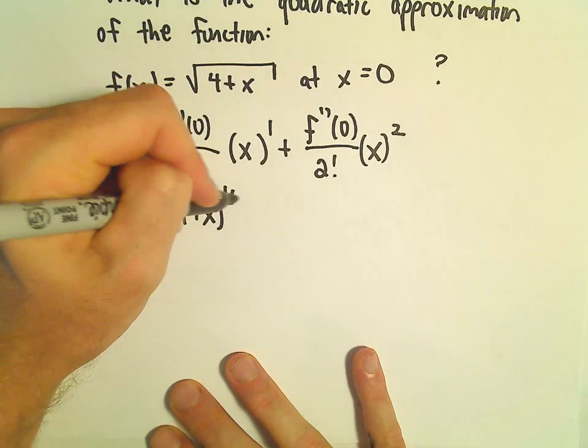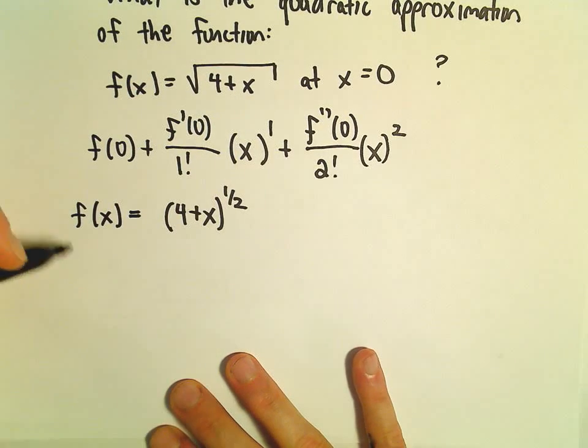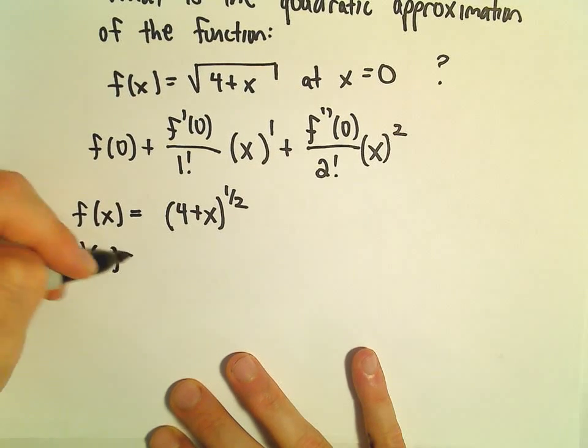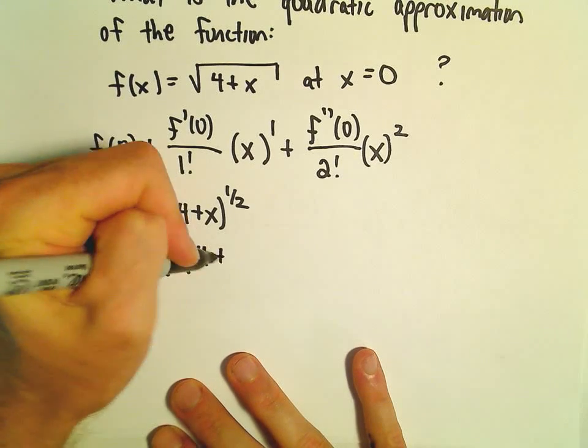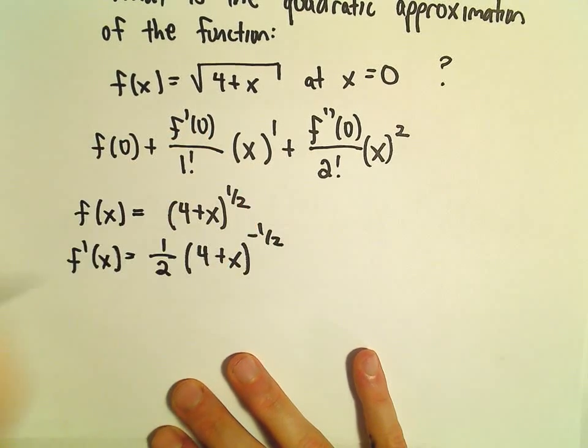So we have 4 plus x to the 1 half. That's our original function. So f prime of x, we would get 1 half, then 4 plus x to the negative 1 half.